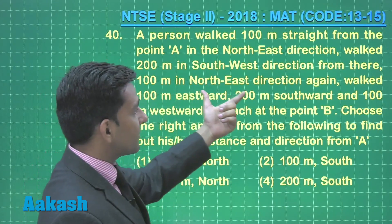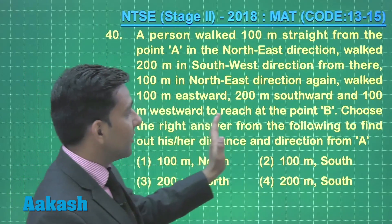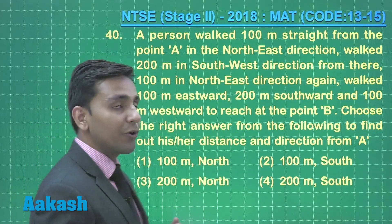100 meters in northeast direction, again walked 100 meters in eastward direction, 200 meters southward and then 100 meters westward to reach at point B.